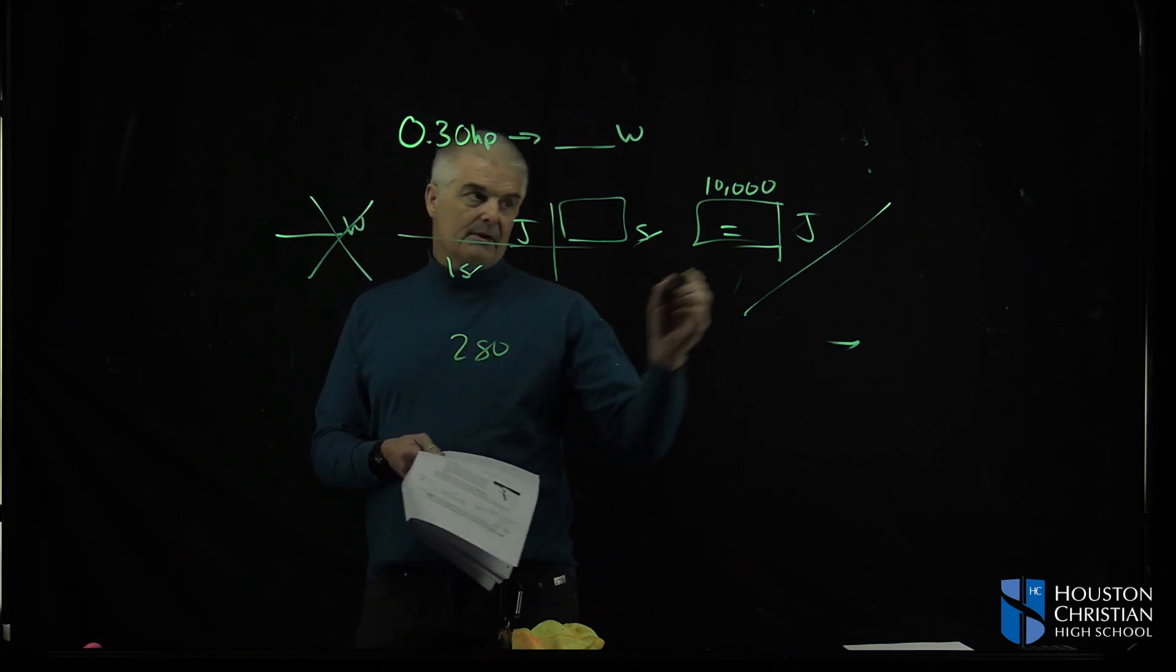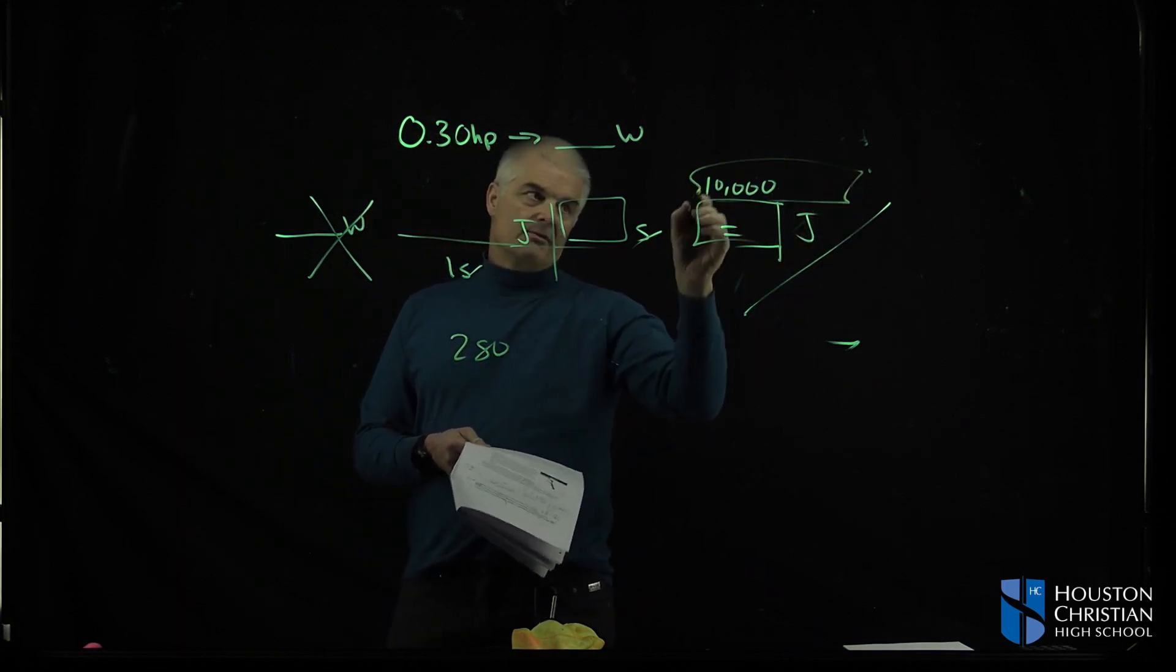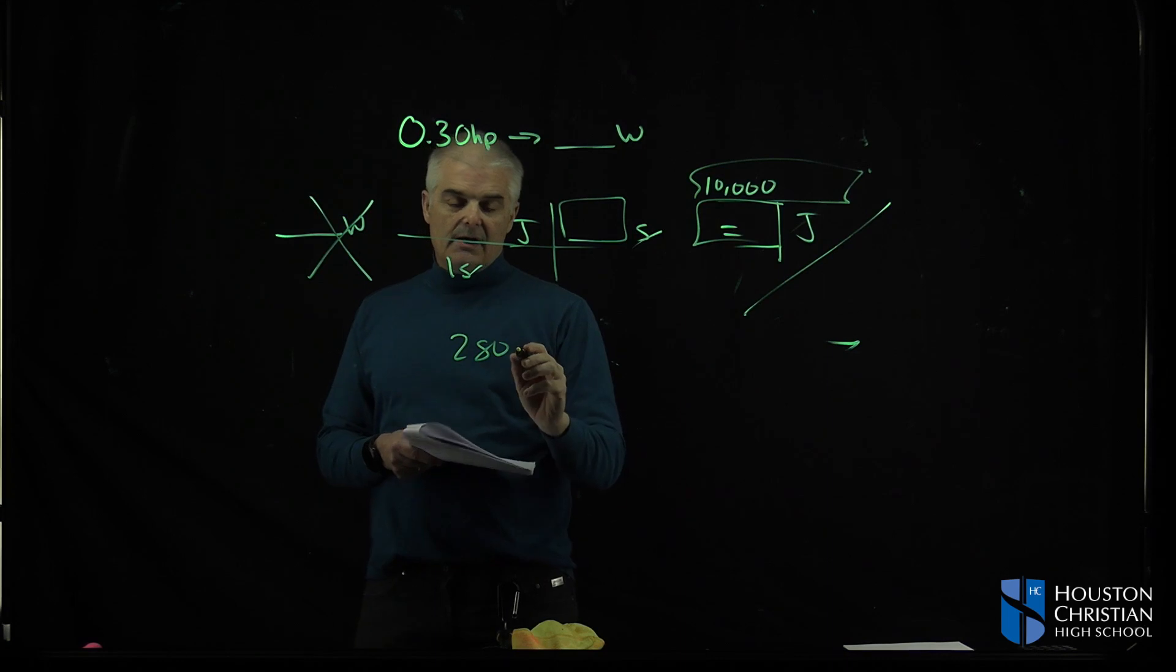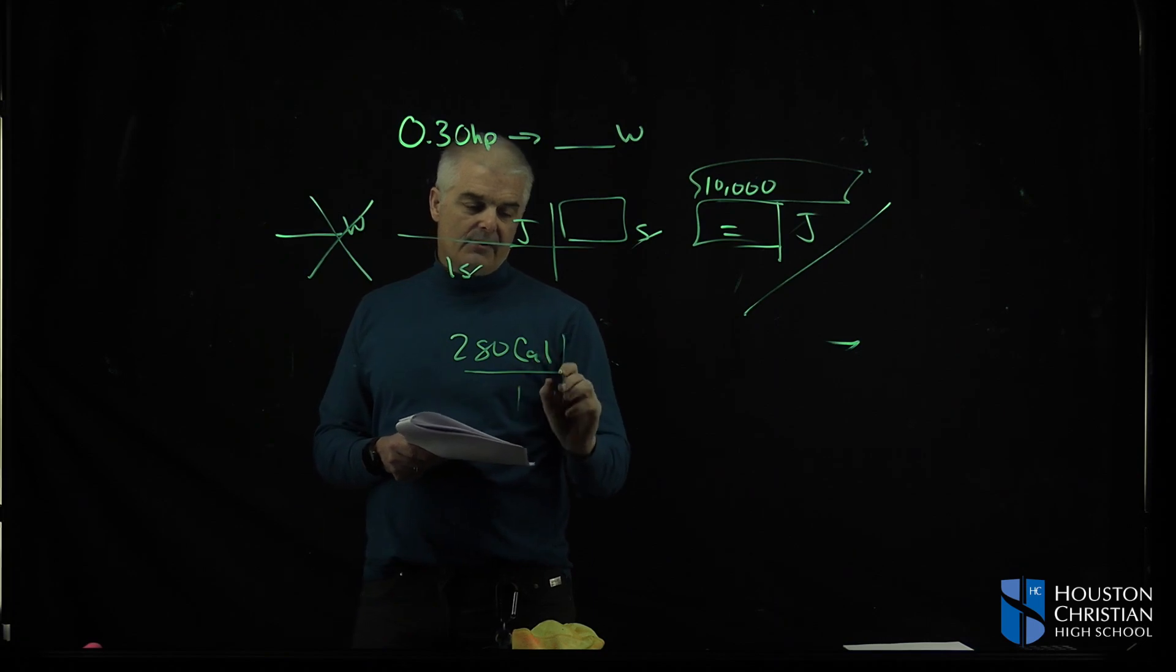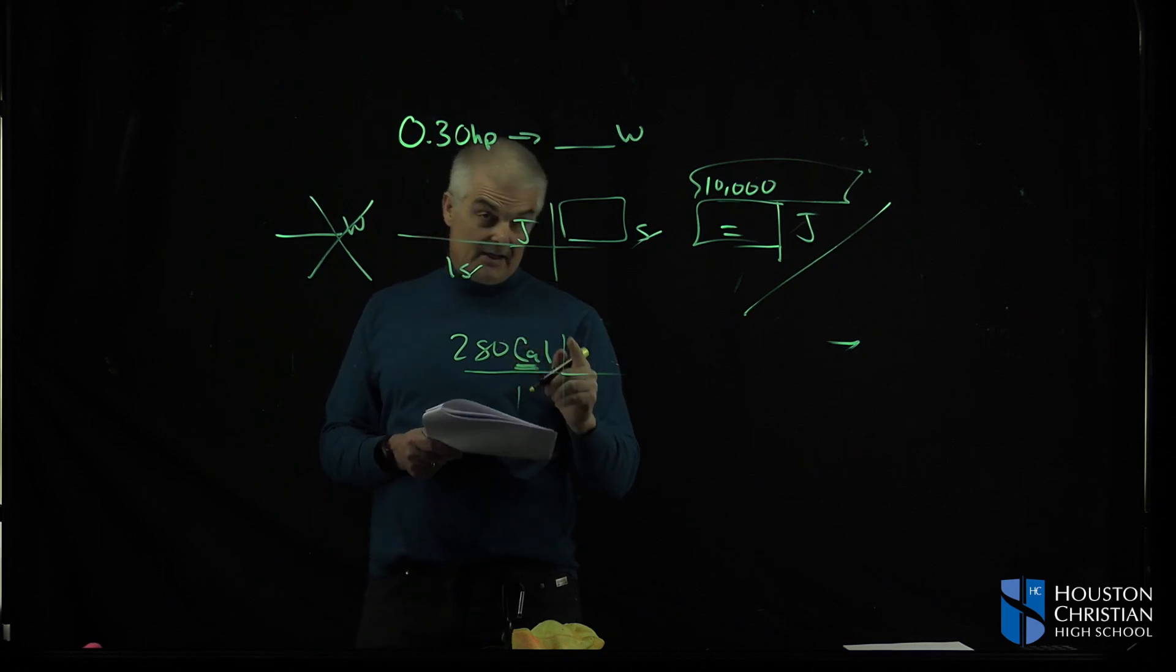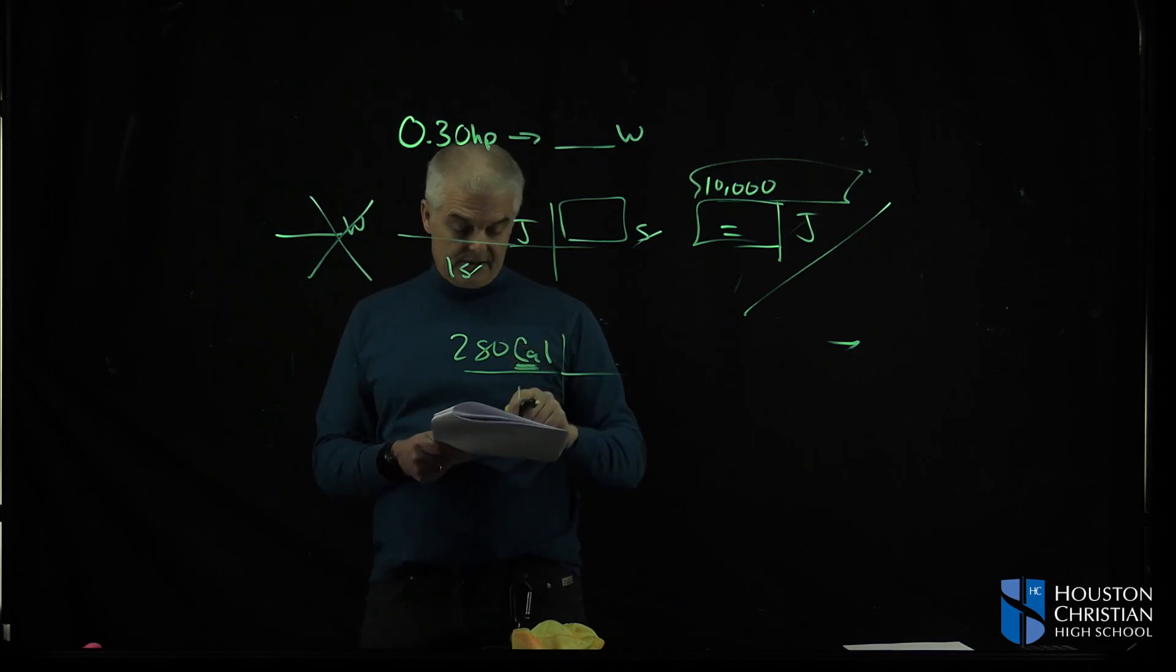Now, by the way, this number should be, you're going to get a much bigger number than this. That's way small. You have 280 capital C calories, and then you have to convert that into joules. But note that the capital C calorie is a kilocalorie, not a little c calorie. It's all given there.